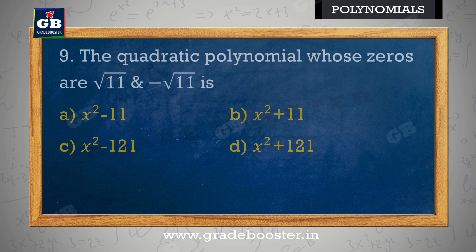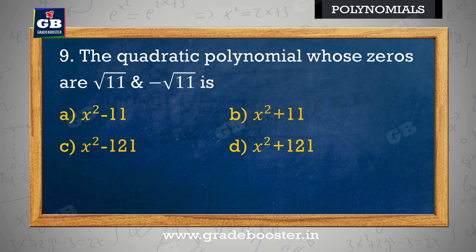The quadratic polynomial whose zeros are √11 and −√11 is: a) x² − 11, b) x² + 11, c) x² − 121, d) x² + 121.